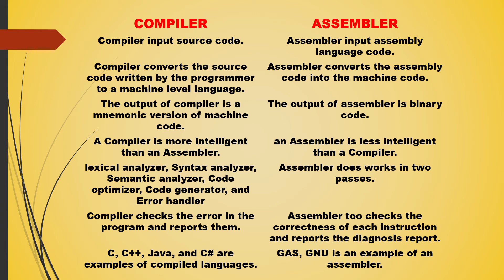The compiler takes an input source code, while an assembler takes an input as an assembly language code. The second point of difference is the compiler converts the source code written by the programmer to a machine level language, while the assembler converts the assembly code into the machine code.